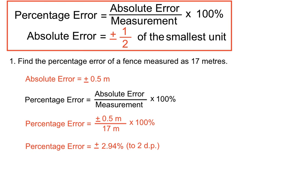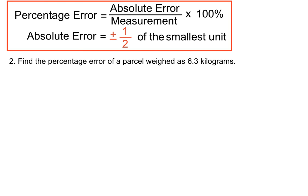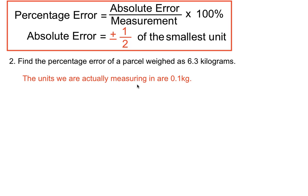Let's have a look at a different example. Find the percentage error of a parcel weighed as 6.3 kilograms. Now it looks like we're measuring in kilograms. However, they've expressed 0.3 of a kilogram, so it's really like we're measuring in one tenth of a kilogram in this situation. We're actually measuring in 0.1 lots of a kilogram — not whole kilograms — because we're quoting that 0.3. So if we're measuring in 0.1 lots of kilograms, that's our smallest unit.